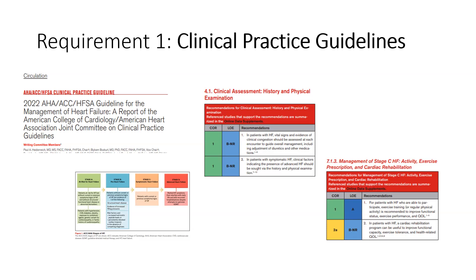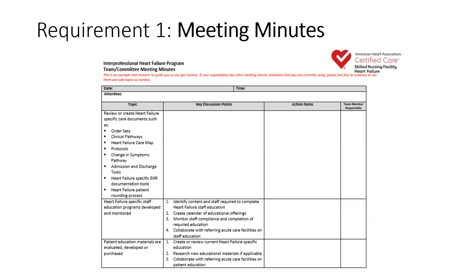The final piece of documentation you want to submit for Requirement 1 are your heart failure program committee meeting minutes. Your heart failure program committee should have been meeting for at least six months before you apply for certification, and they should be meeting at least quarterly. Meeting minutes should include robust discussions regarding your program development and maintenance, heart failure measures and metrics, and performance improvement initiatives.